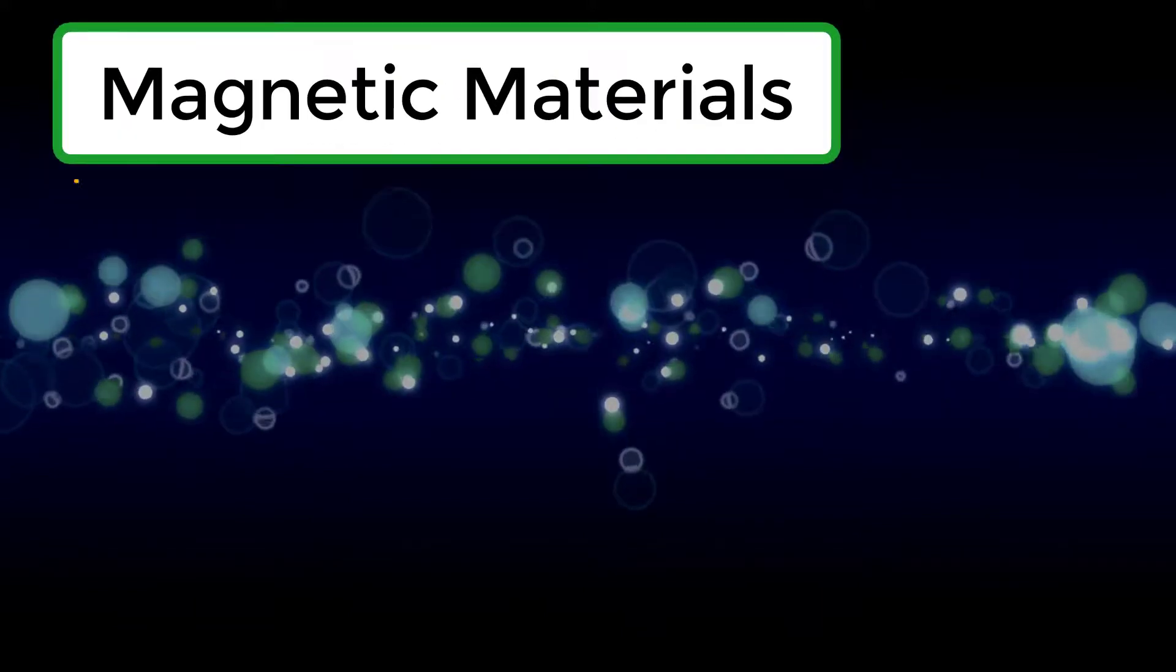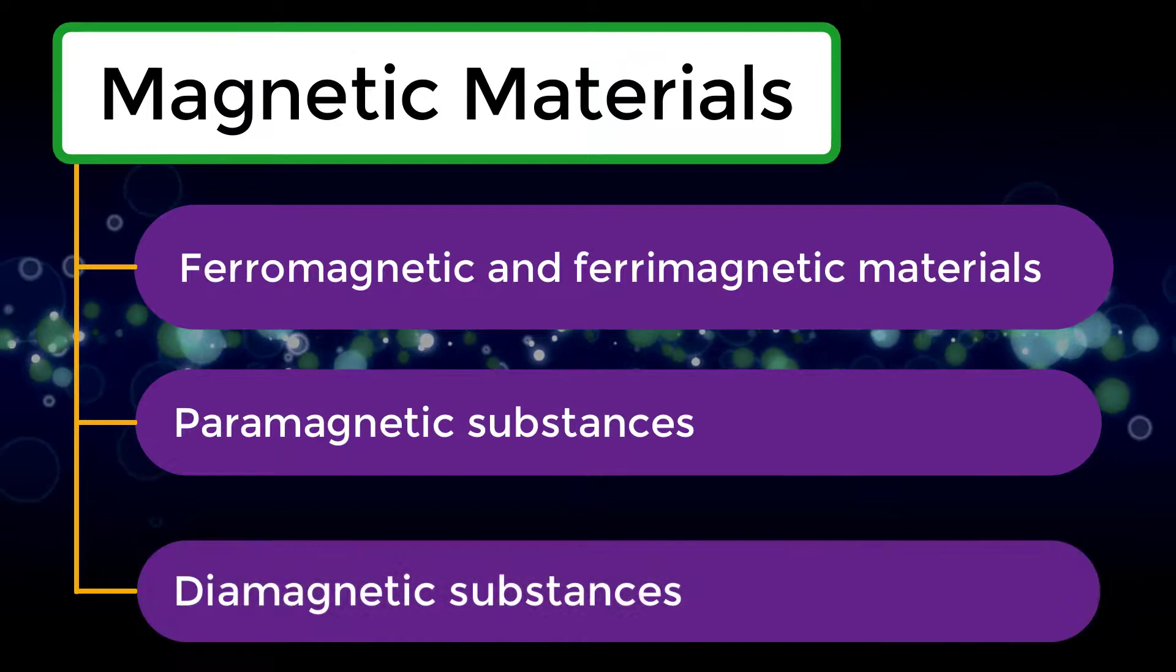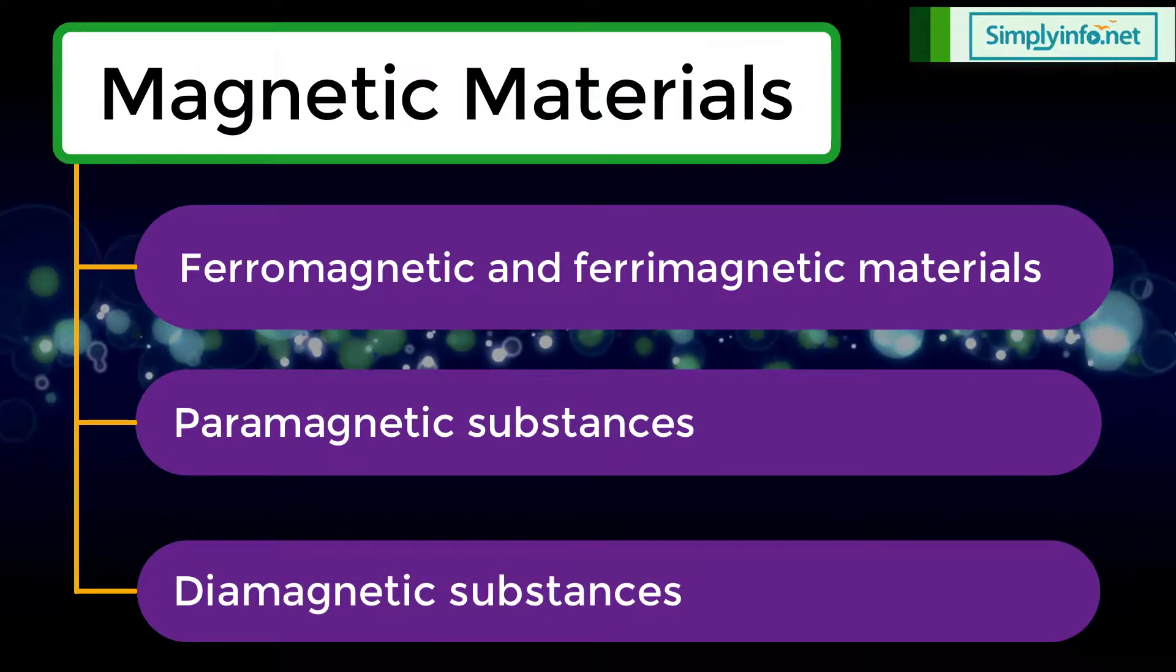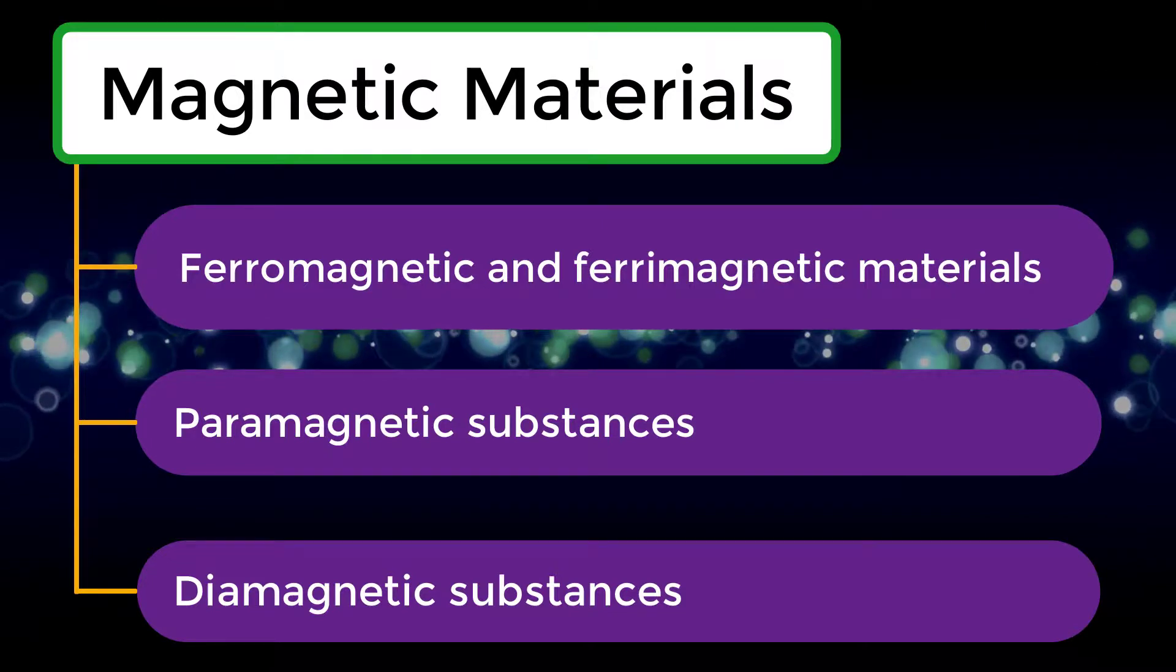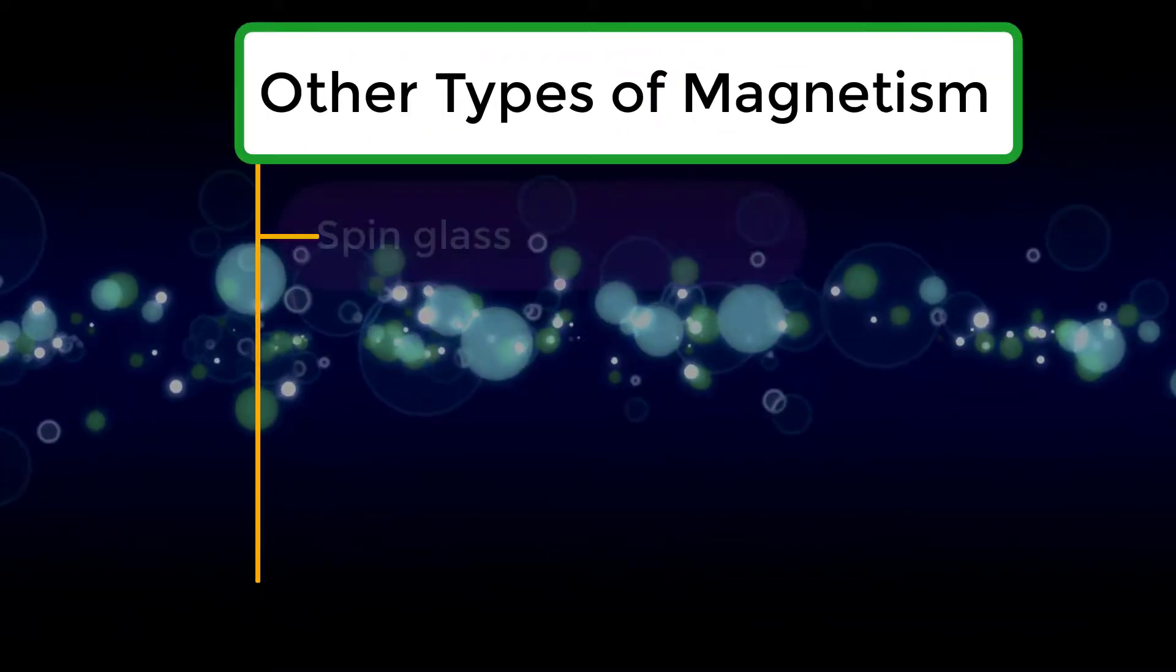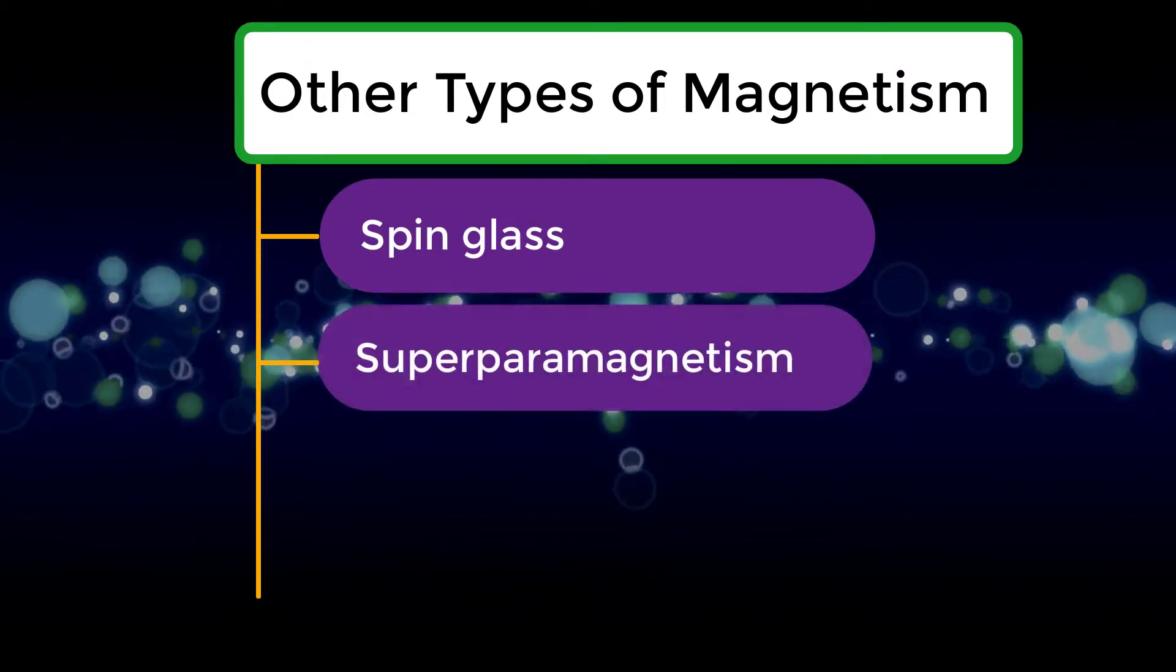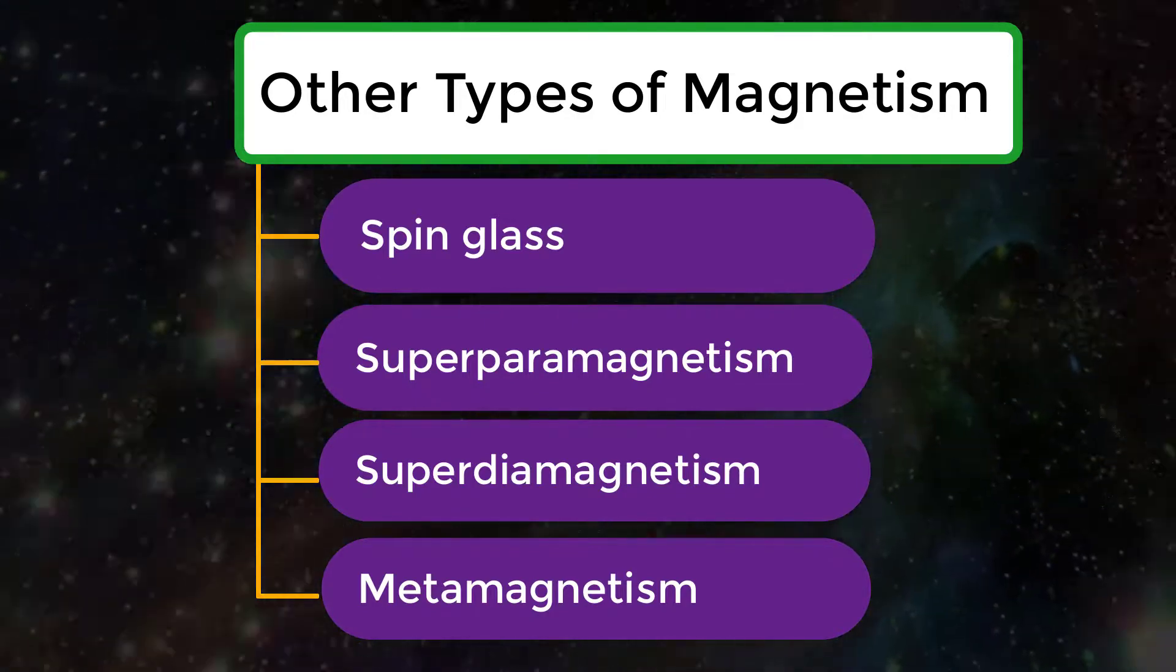Magnetic materials. Ferromagnetic and ferrimagnetic materials. Paramagnetic substances, diamagnetic substances. Other types of magnetism: spin glass, super paramagnetism, super diamagnetism, and metamagnetism.